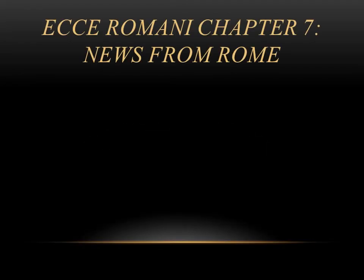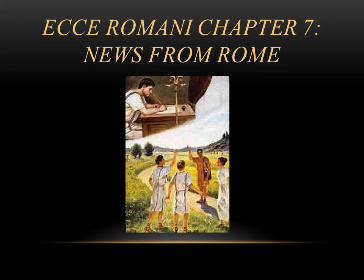Hey guys, in this video we're going to be talking about chapter 7 of the Ecce Romani textbook titled News from Rome. In this story you're going to be reading about a messenger who arrives from Rome with a letter for Gaius. The grammar for this chapter is extremely important as you're finally going to learn about declensions, which is a really foundational idea of how Latin works. We've been talking about it for the past couple chapters, we just haven't been using the word declension, and you haven't seen the full picture yet. In this chapter you'll finally see it and understand more about Latin grammar.